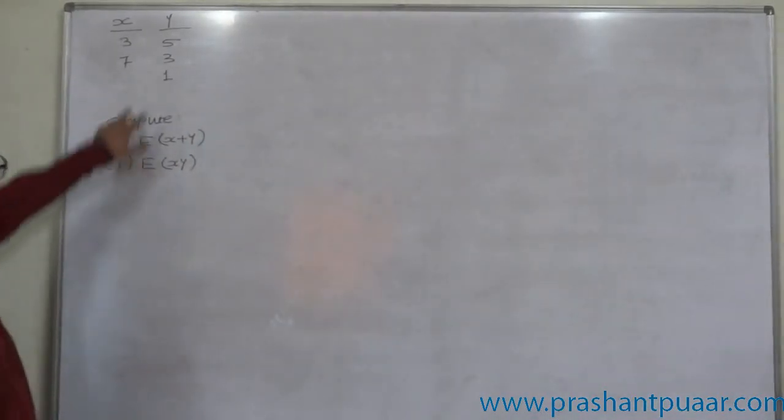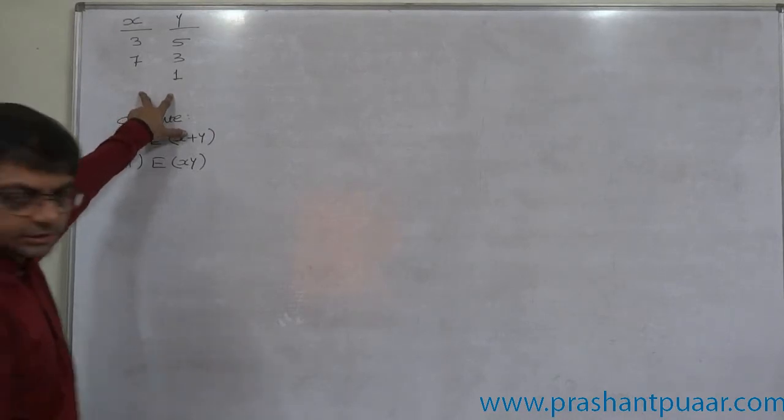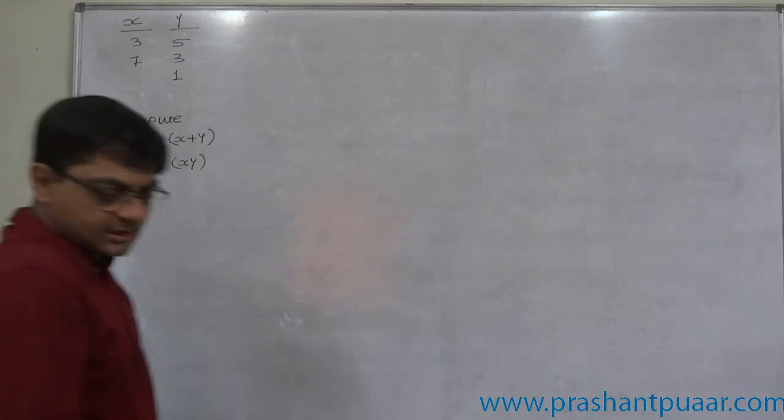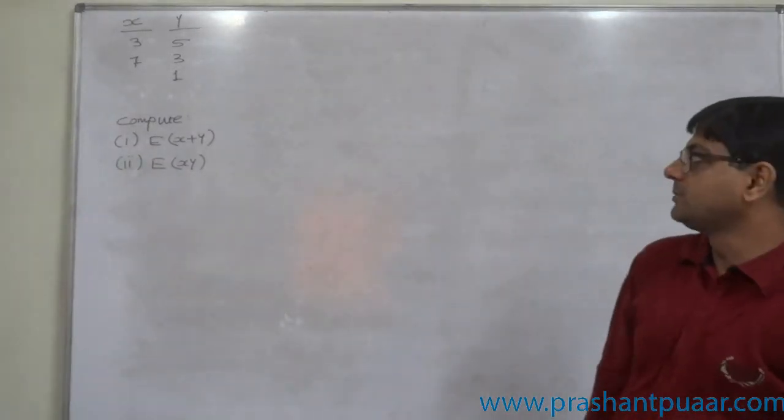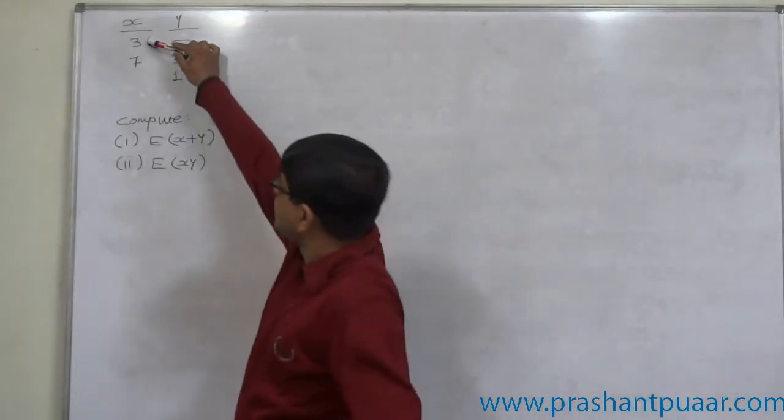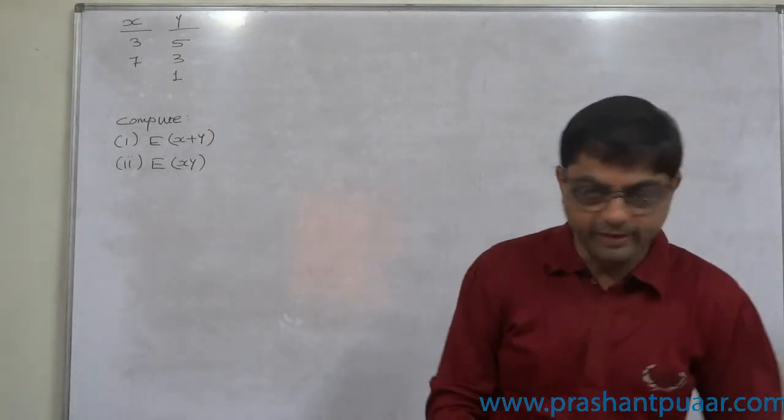This is the case of simple random variable, neither discrete nor continuous. What do we mean by simple random variable? Just values of the random variable are there. No information about probability or frequency is given. That means these numbers have equal frequency. These are equally likely outcomes or events.